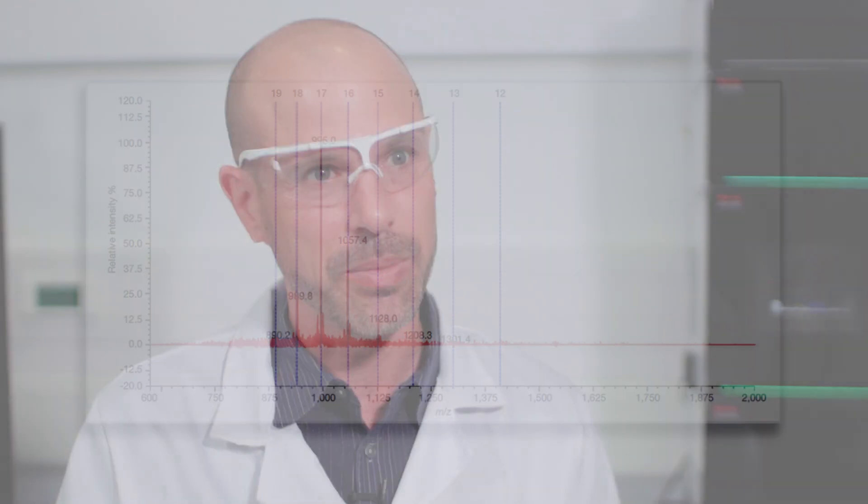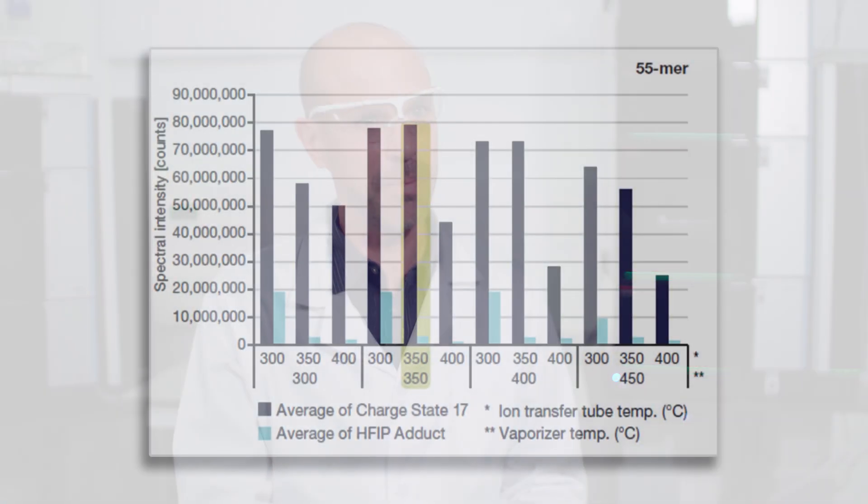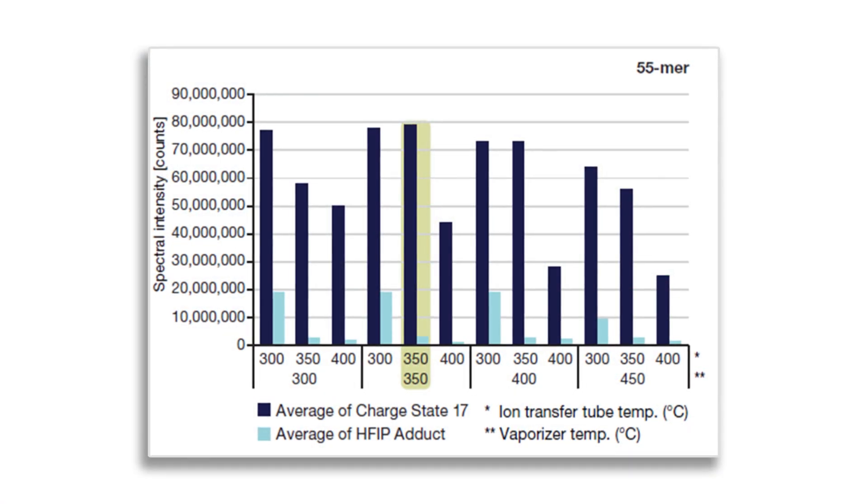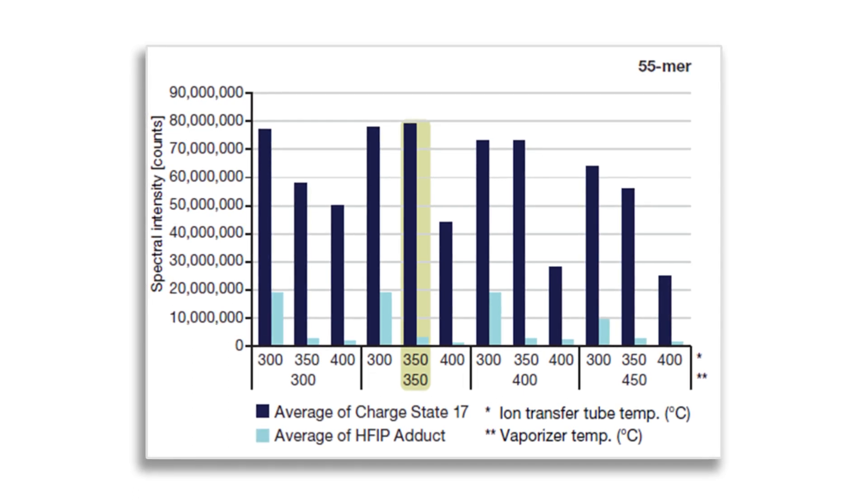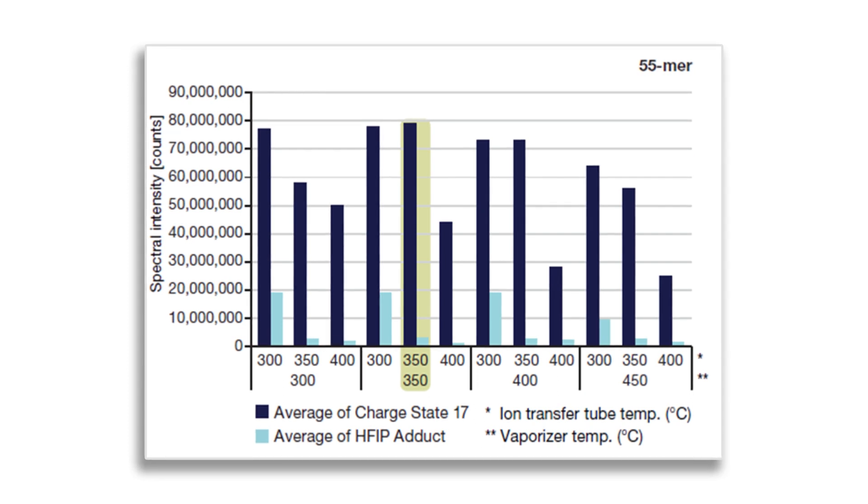When it comes to the chromatography what we found is that reducing the amount of HFIP gives for a cleaner spectrum and this spectrum is easier for our deconvolution and easier deconvolution makes for an easier oligo mass confirmation.